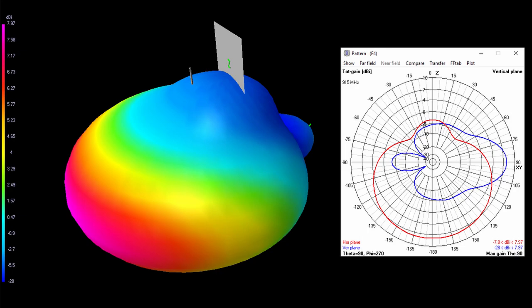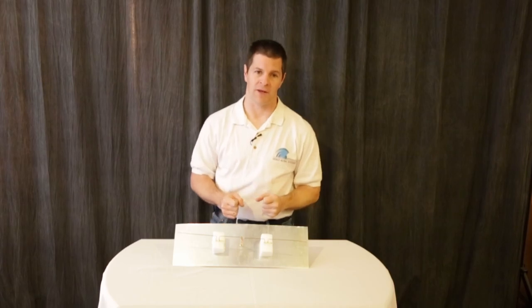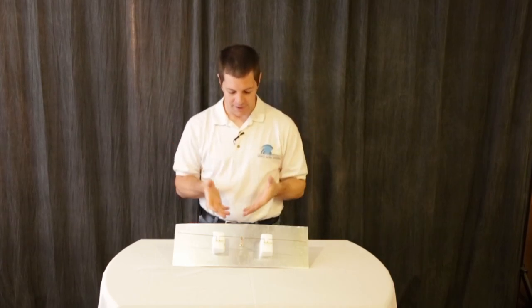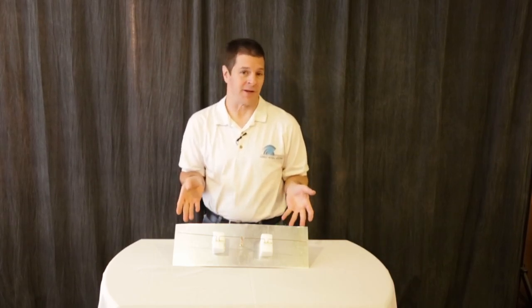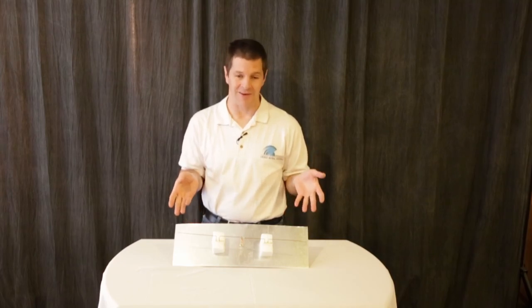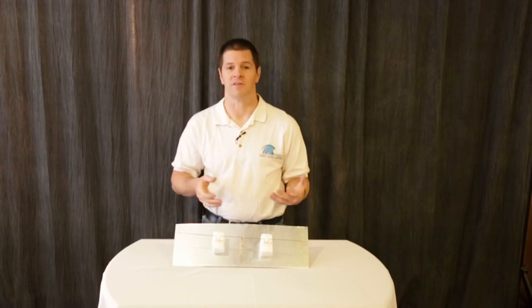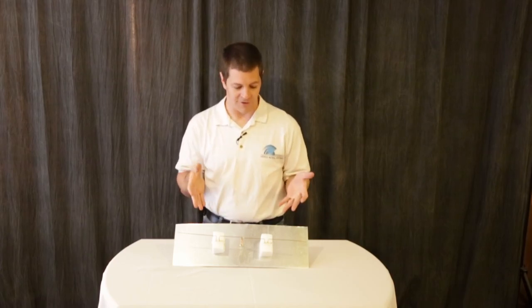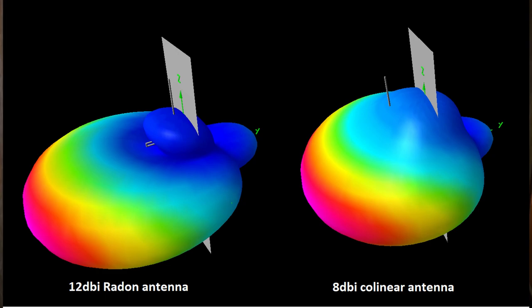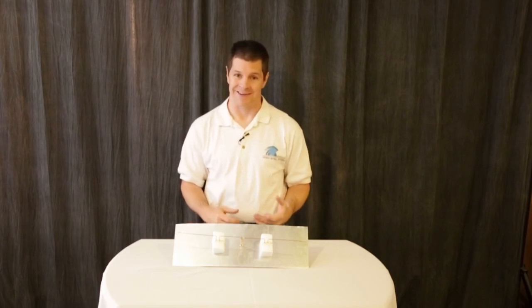As you can see, the shape is unusual and very similar in size to our 12 dB radon antenna. That's because it uses similar technology. The difference is this one is lower gain—8 dBi compared to 12 dB—and this one is DIY friendly, whereas our radon antenna is not.